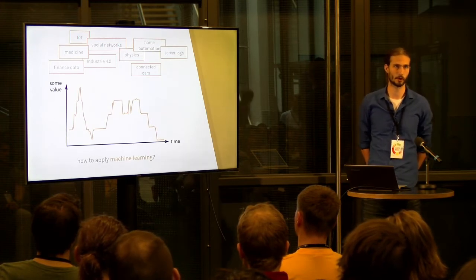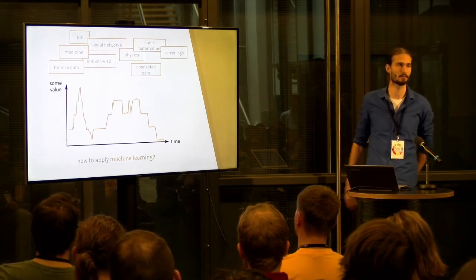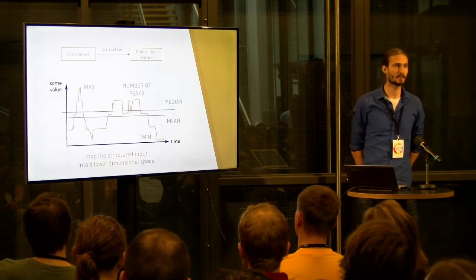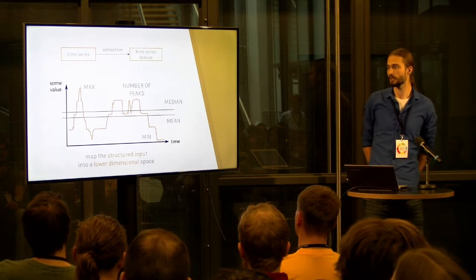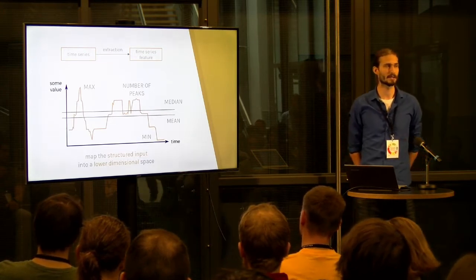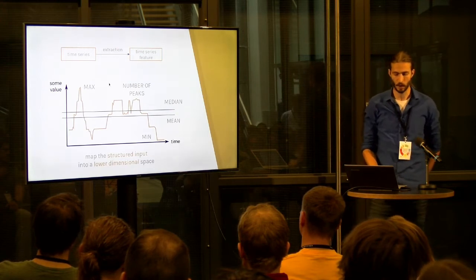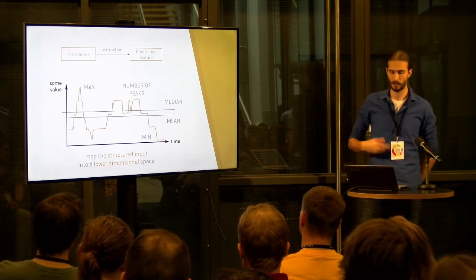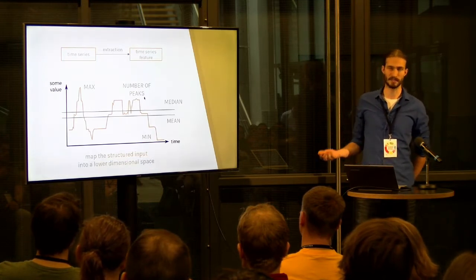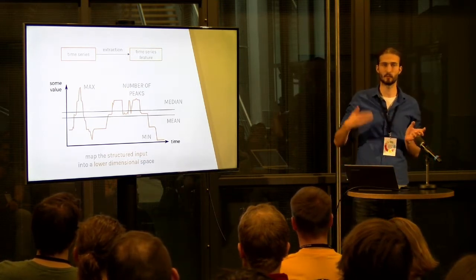The machine learning model has to learn that a peak after 5 minutes is the same as a peak after 10 minutes, because the maximum temperature itself is what breaks the device. So what we do is map the structured input of the time series into a lower-dimensional space — we extract features. A feature is a value that you can calculate from your time series. A very simple one is the global maximum. Other features include the median, the mean, the global minimum, or for example counting the number of peaks. You can think of a feature like a Python function: you feed in your time series as an array and get back one value.